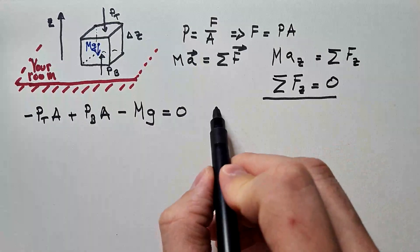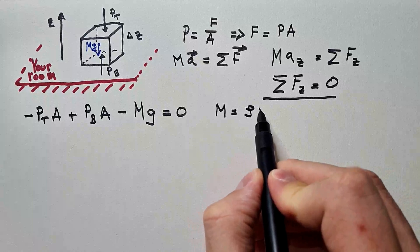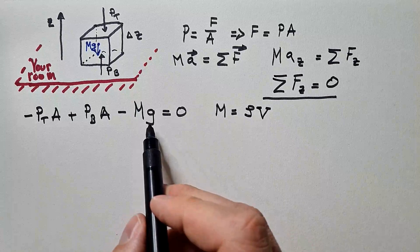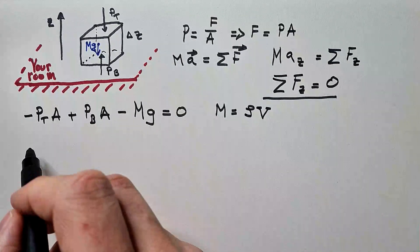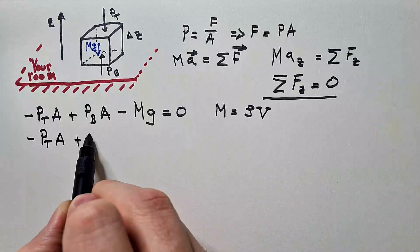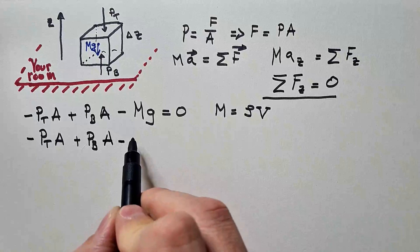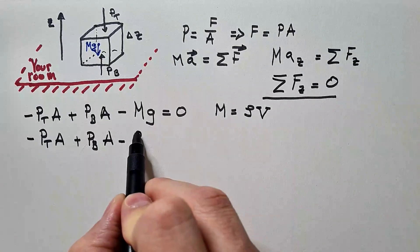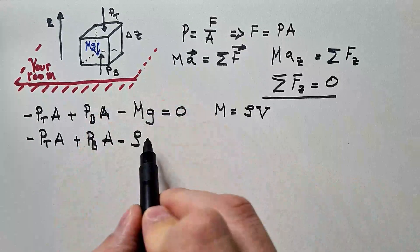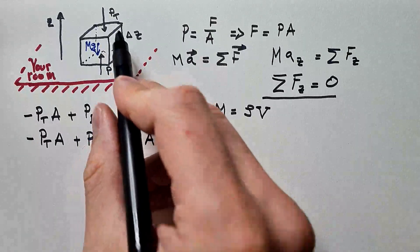Now, we know that mass is density times volume. This capital V is volume. So I can use that in this equation to write minus Pt times A plus Pb times A minus m. That is density times volume.